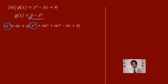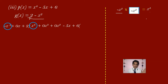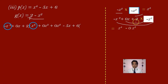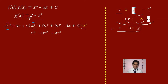Compare the first term of the dividend x power 4 and the first term of the divisor minus x square. We need minus x square multiplied by some value to give x power 4. Since the divisor has coefficient minus 1, we multiply by minus x square: minus x square into minus x square gives x power 4, 0x into minus x square gives 0x cube, and plus 2 into minus x square gives minus 2x square. Write minus x square in the quotient and write x power 4 minus 0x cube minus 2x square below the dividend.